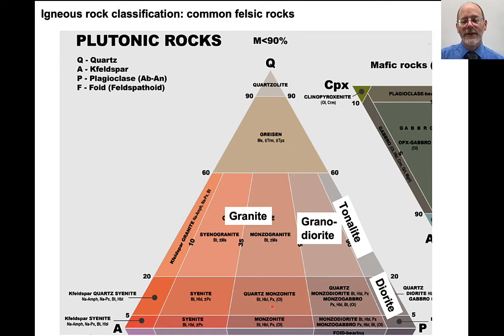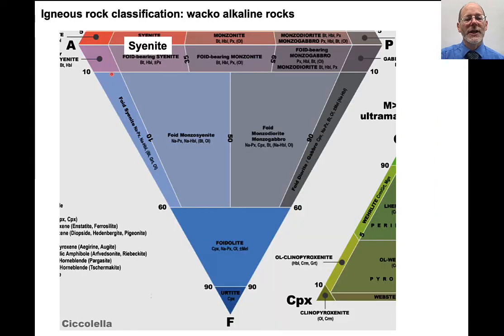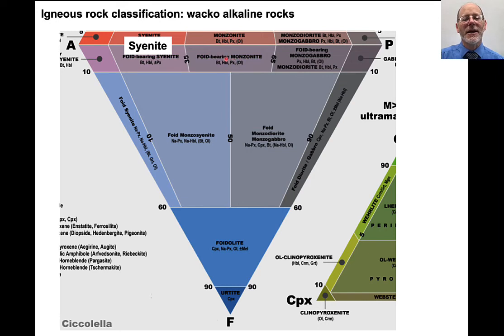This is the top of the diagram. Often there's another part below for feldspathoids — so they're quartz absent. These rocks also contain alkali feldspar and plagioclase, but with a feldspathoid instead of quartz — sometimes called foids. For example, where we had a monzonite, here we would call it a foid-bearing monzonite, which has a little bit of feldspathoid instead of a little bit of quartz. With more feldspathoid, it gets other classification names.